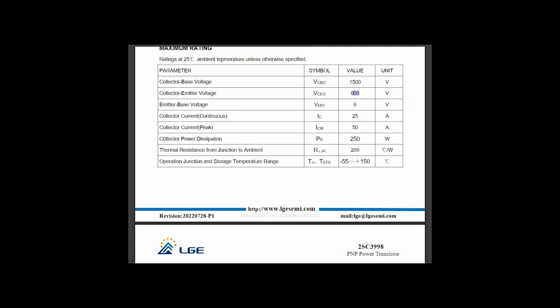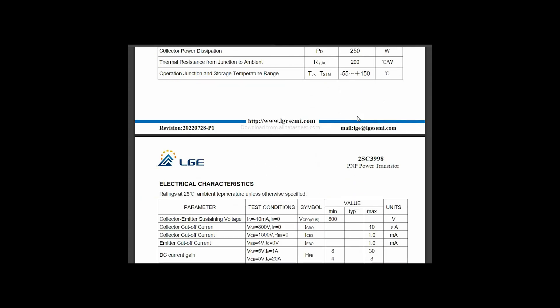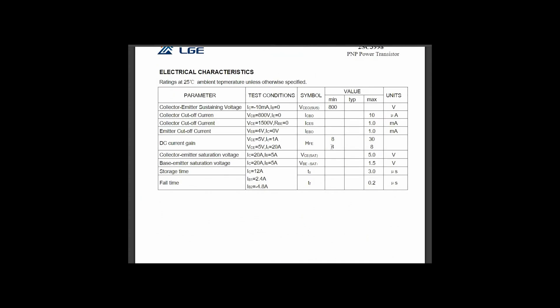We have current of the collector is 25 A. We have collector emitter voltage 800 volts. We have DC current gain is minimum 4 and maximum 8.